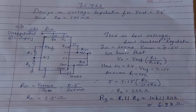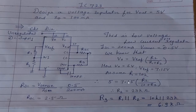First we calculate Vout using: Vout = Vref × R2 / (R1 + R2). In this design problem, Vout equals 5 volts and Vref equals 7.15 volts. Assuming R1 equals 10kΩ and substituting: 5 = 7.15 × R2 / (10 + R2). Solving, we get R2 equal to 23 kΩ.